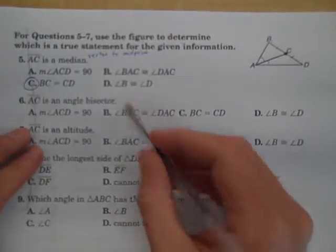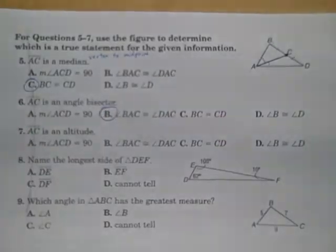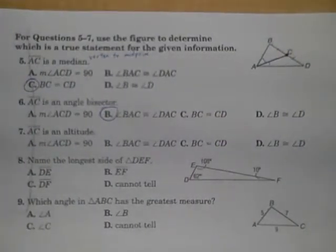Angle BAC is congruent to angle DAC. So if AC is an angle bisector, that's what happens.